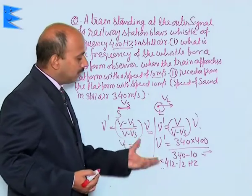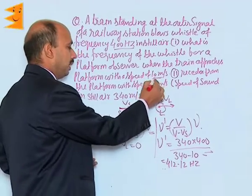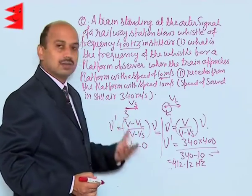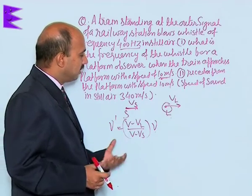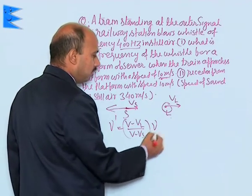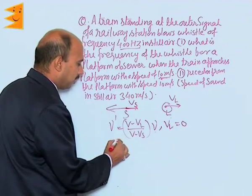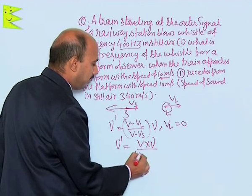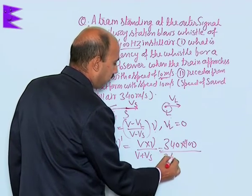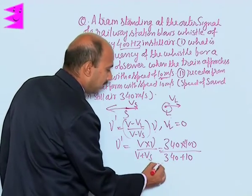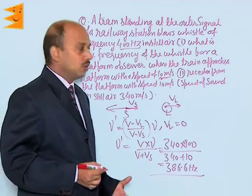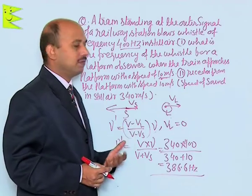When the train is receding, the source is going away, so we take the plus sign. With Vl equal to zero, the formula becomes nu dash equals V into nu divided by V plus Vs. That is 340 into 400 divided by 340 plus 10, which gives 386.6 hertz. This is the apparent frequency heard by the listener when the source is receding from the platform at 10 meters per second.